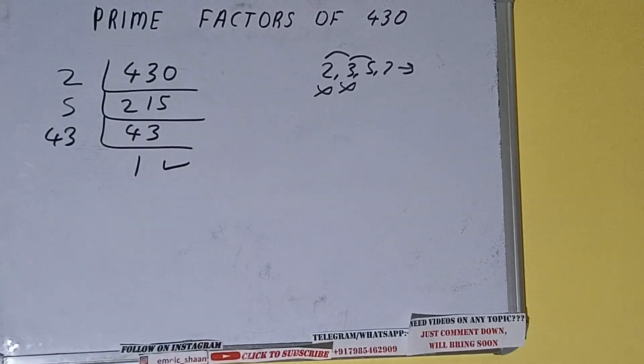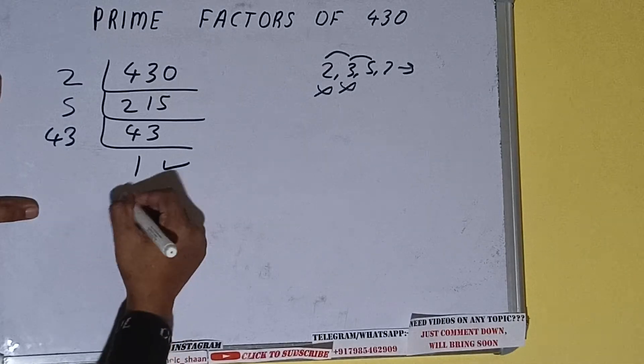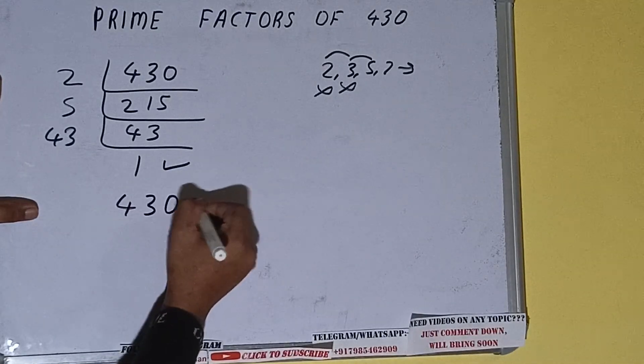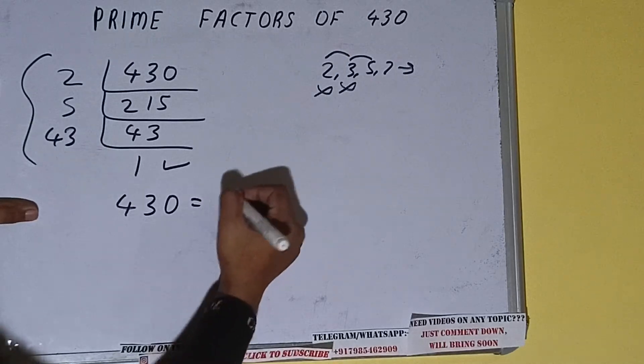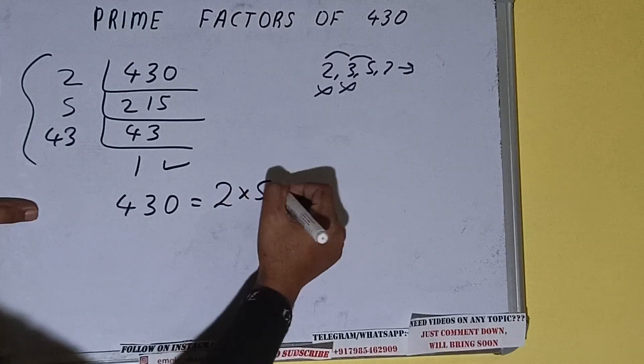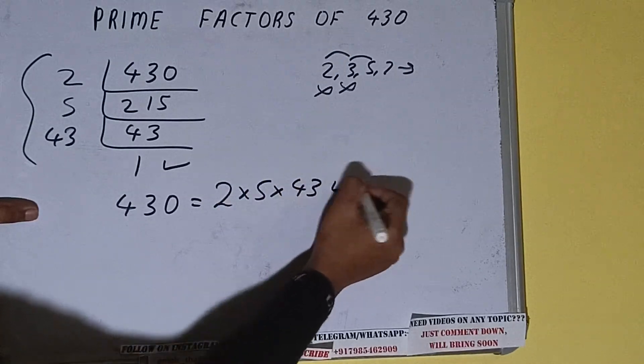Once we get 1 we need to stop and do one last thing. That is, prime factors of 430 equals whatever we have on the left-hand side. That is 2 × 5 × 43. That will be the answer.